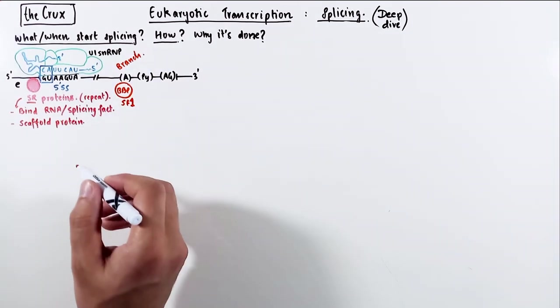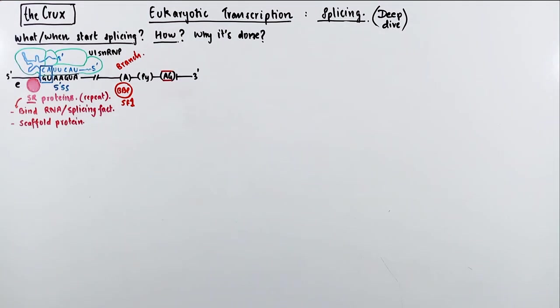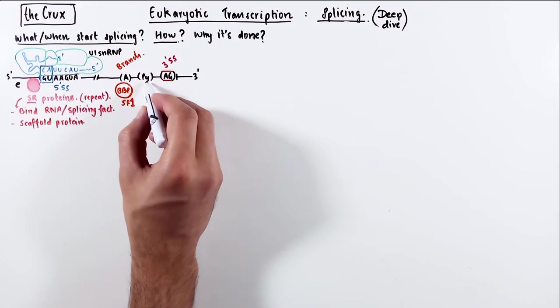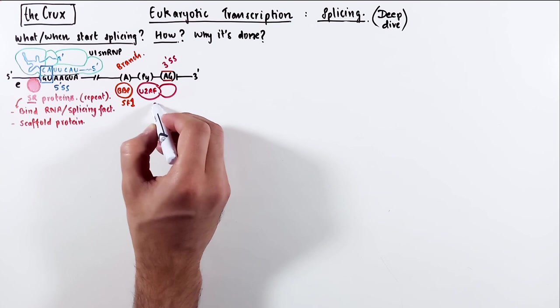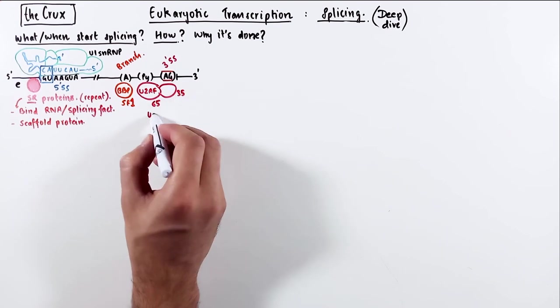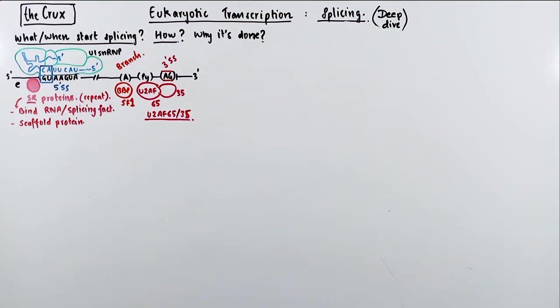and sometimes they can also regulate splicing. The adenine in the branch point is recognized by a branch point binding protein, also known as splicing factor 1. The AG in the 3' splice site of the intron is recognized by U2AF protein, which comes as a dimer.